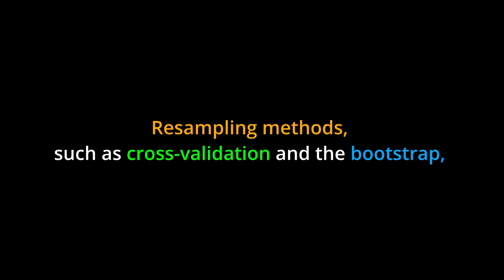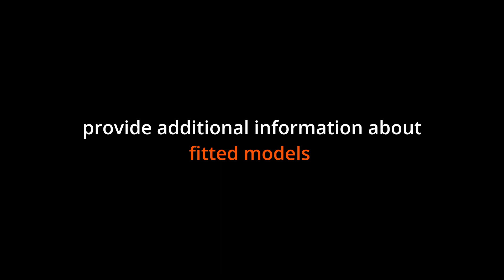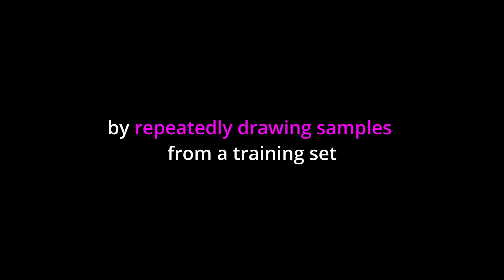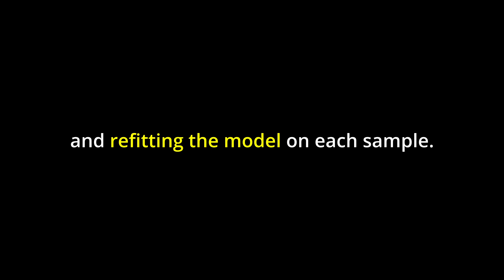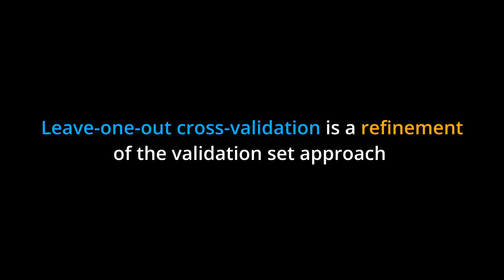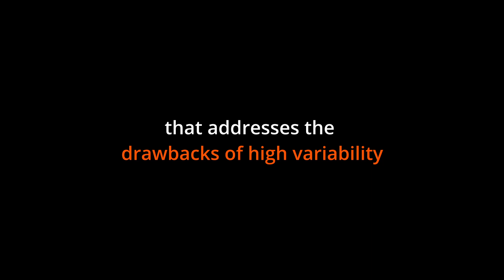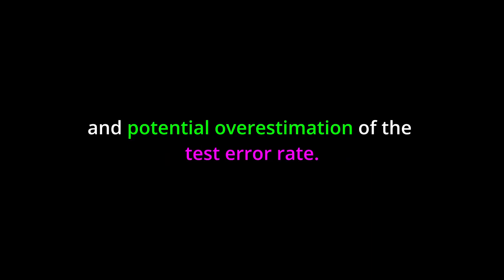Four, apply resampling methods to real-world data and evaluate the performance of statistical learning models. Key points: resampling methods such as cross-validation and the bootstrap provide additional information about fitted models by repeatedly drawing samples from a training set and refitting the model on each sample. Leave-one-out cross-validation is a refinement of the validation set approach that addresses the drawbacks of high variability and potential overestimation of test error rate.